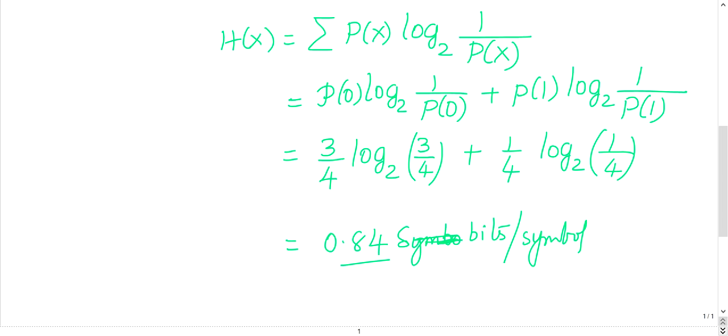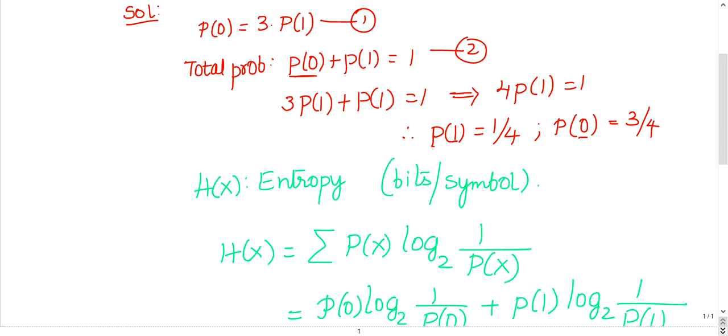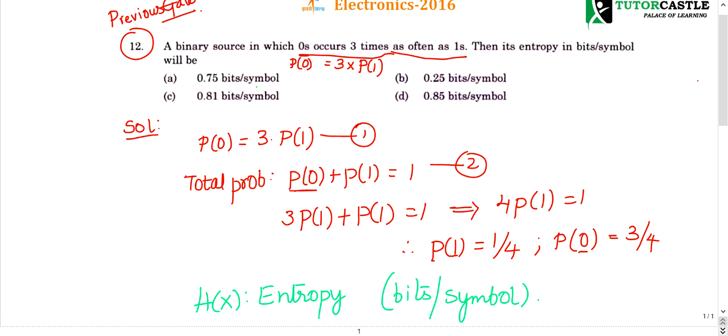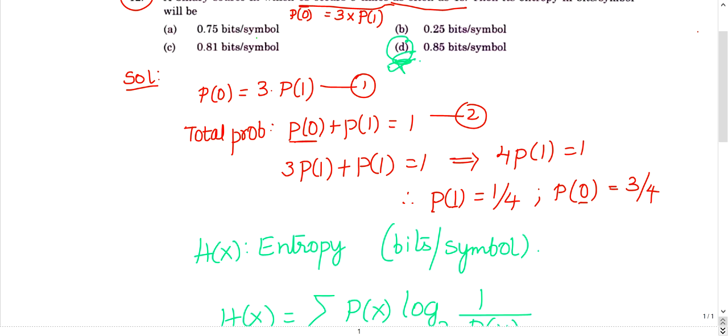So this is the final answer. The right choice is 0.84, nearly 0.85. Wait, sorry, 0.81 is already there, so the right choice is 0.81. Option C is the correct choice.